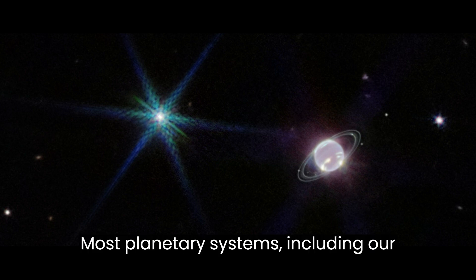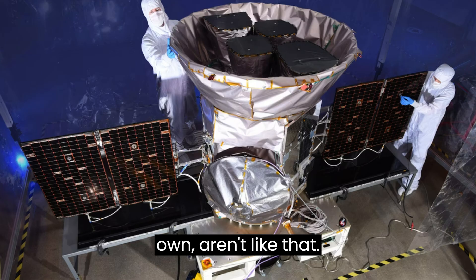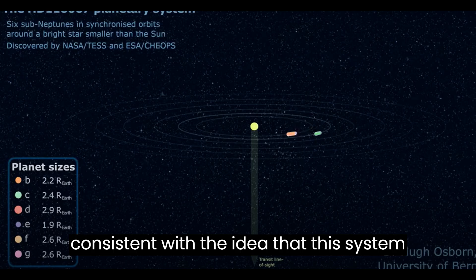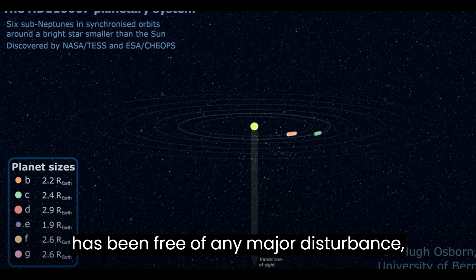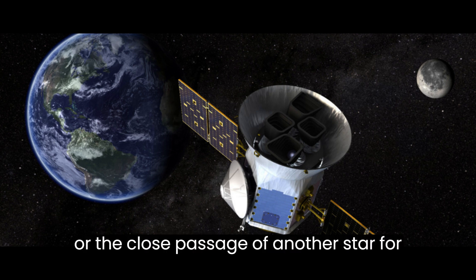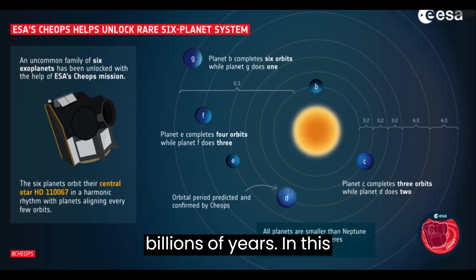Most planetary systems, including our own, aren't like that. The resonant orbits of these planets are consistent with the idea that this system has been free of any major disturbance, say, a catastrophic impact, or the close passage of another star for billions of years.